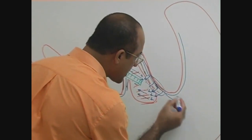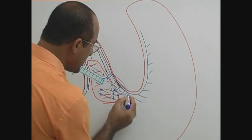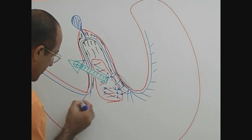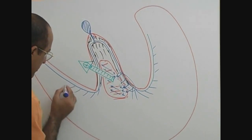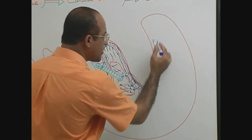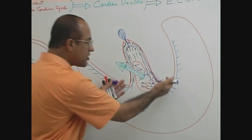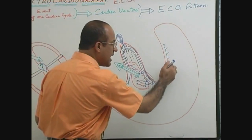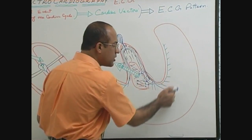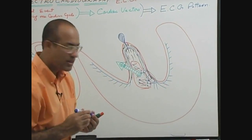There are branches coming out of the Purkinje system — the right bundle branch and the left bundle branch. The wave of depolarization comes from these bundle branches and their Purkinje fibers to the ventricular myocardium.